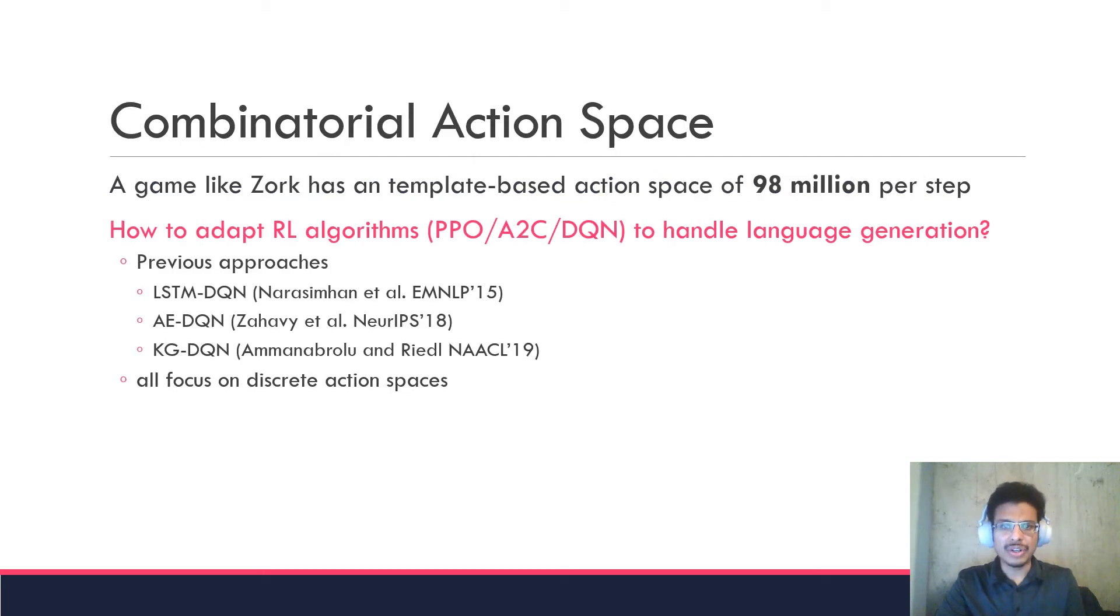Another major challenge is the combinatorially large action space size. For a game like Zork, we're operating with an action space of 98 million possible actions per step. The question really becomes: how do you adapt current RL algorithms—usually designed for small discrete spaces or continuous spaces—to handle language generation in this combinatorially sized space?